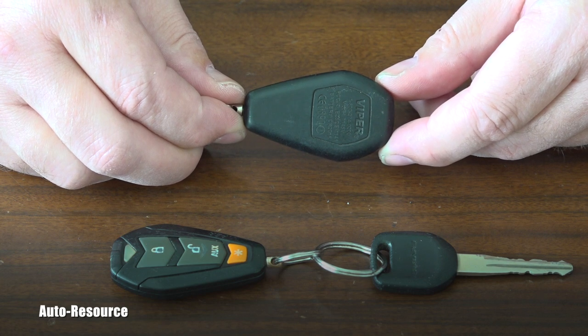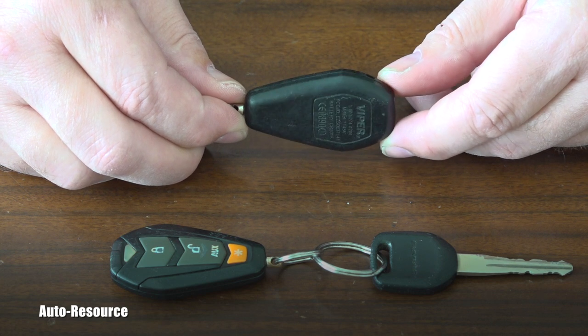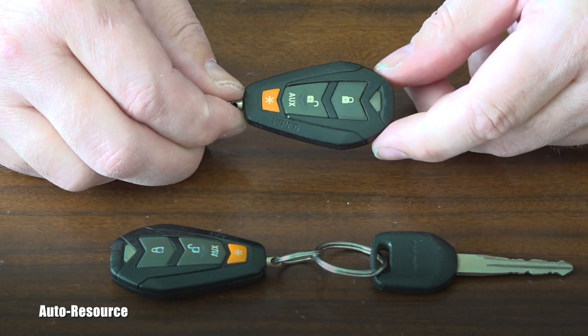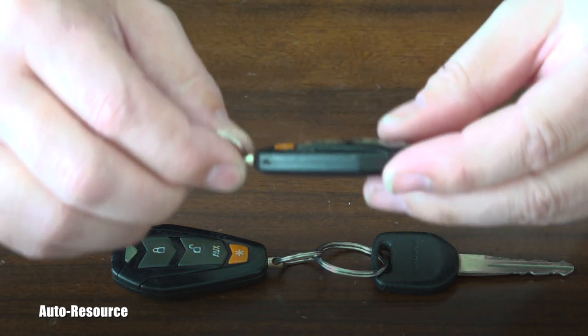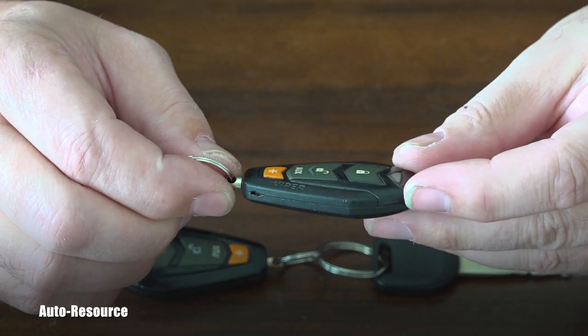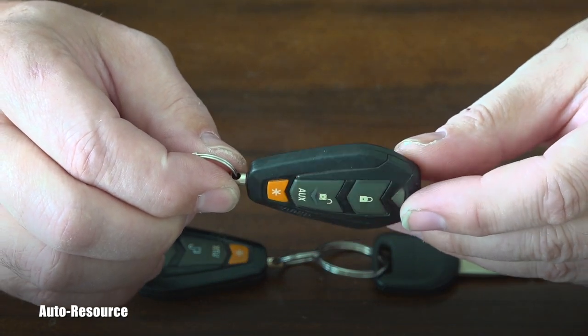The model here is 7145V and this is how you proceed. If you look around that remote, there is a space on this edge for a screwdriver.